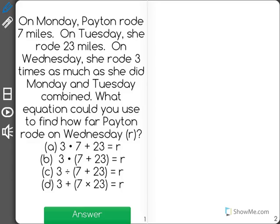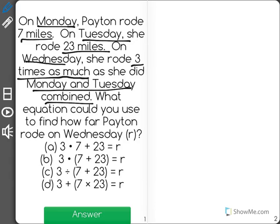The problem says on Monday, Peyton rode 7 miles. On Tuesday, she rode 23 miles. On Wednesday, she rode 3 times as much as she did Monday and Tuesday combined. What equation could you use to find how far Peyton rode on Wednesday?